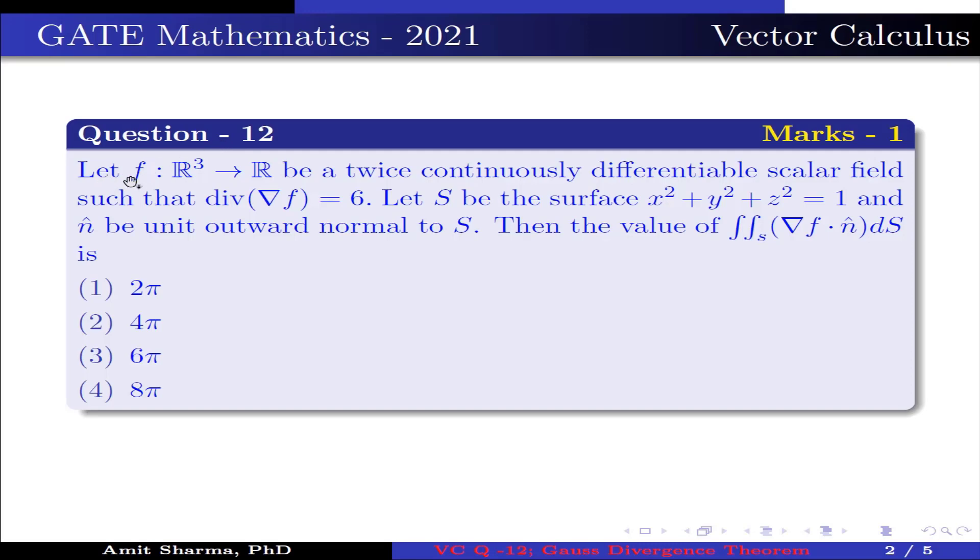Question is: Let f from R³ to R be a twice continuously differentiable scalar field such that divergence of del f is equal to 6. Let S be the surface x² + y² + z² = 1 and n̂ be the unit outward normal to S, then the value of double integration over S, del f dot n ds is: option 1: 2π, option 2: 4π, option 3: 6π, option 4: 8π.